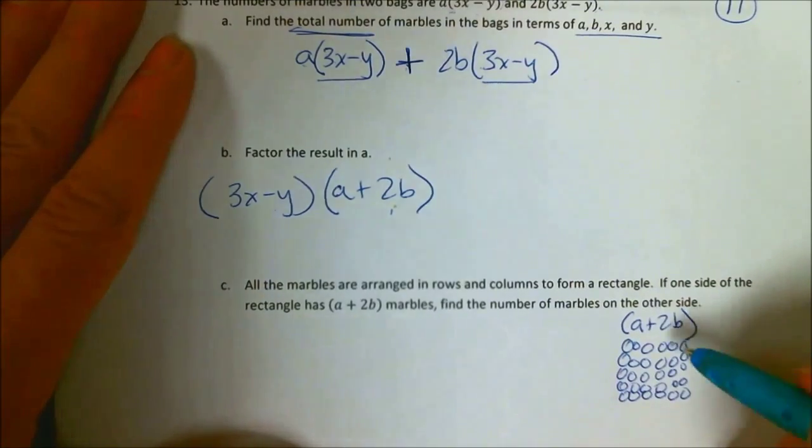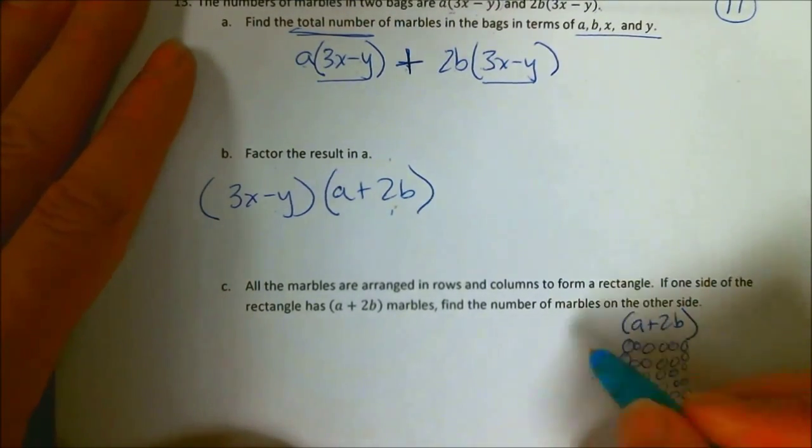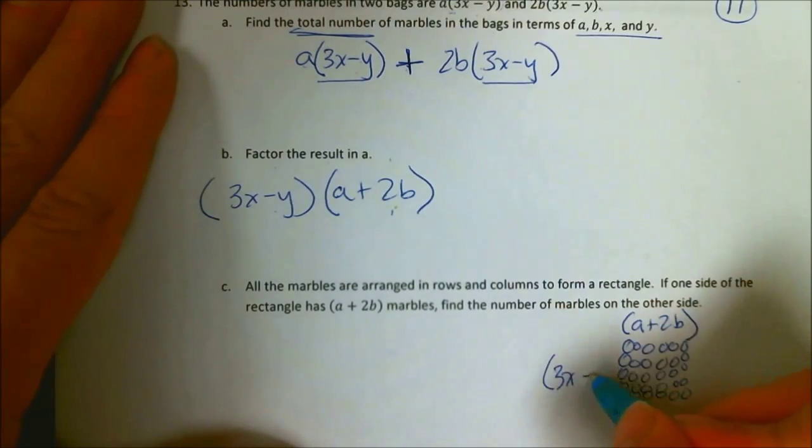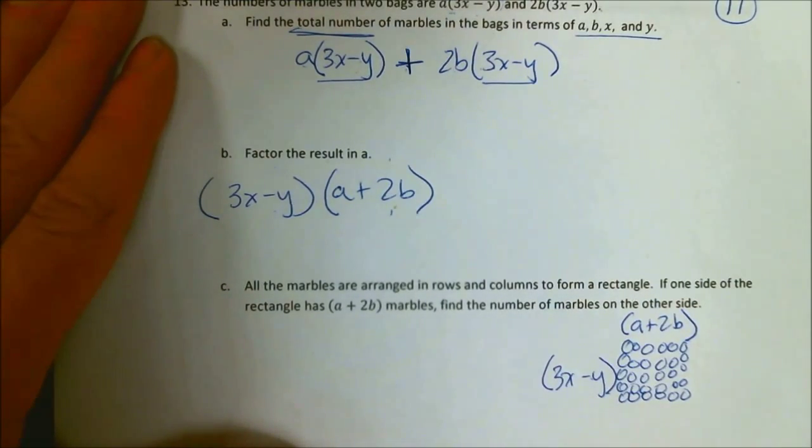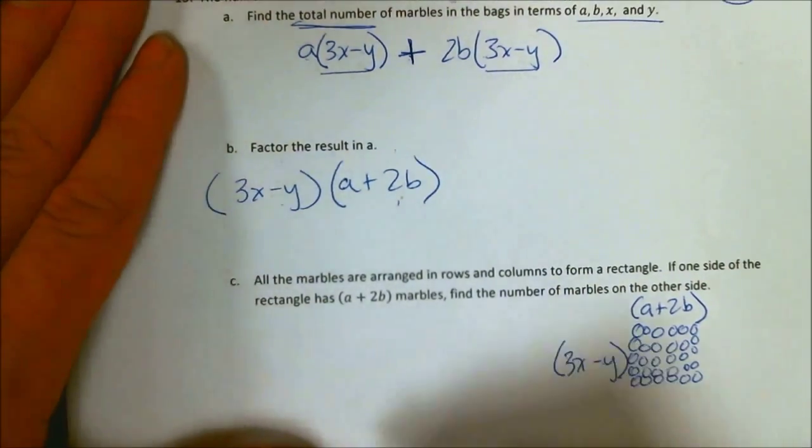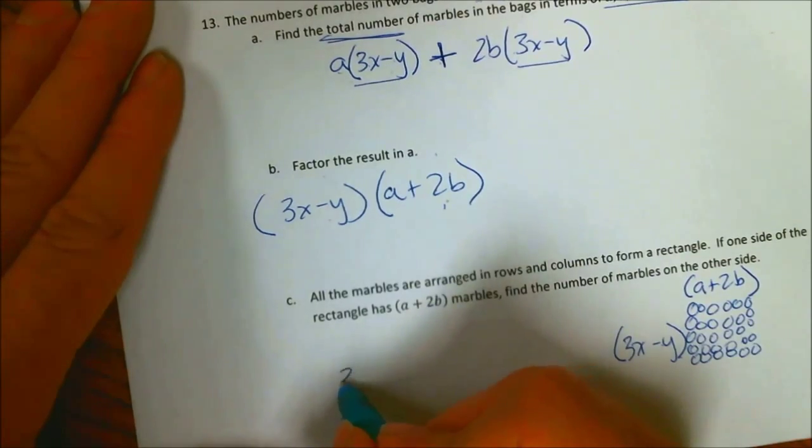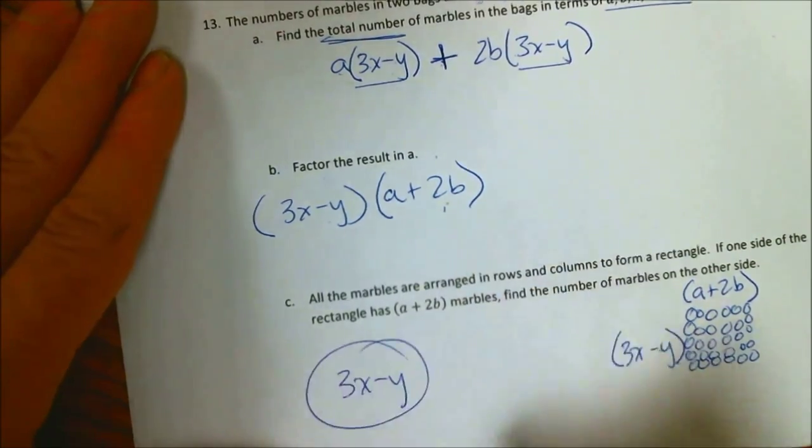Well, I know to find the area of all the marbles, I just do this side times this side. So the other side would simply be 3x minus y marbles. Wouldn't it? The marbles on the other side are 3x minus y. And that's it.